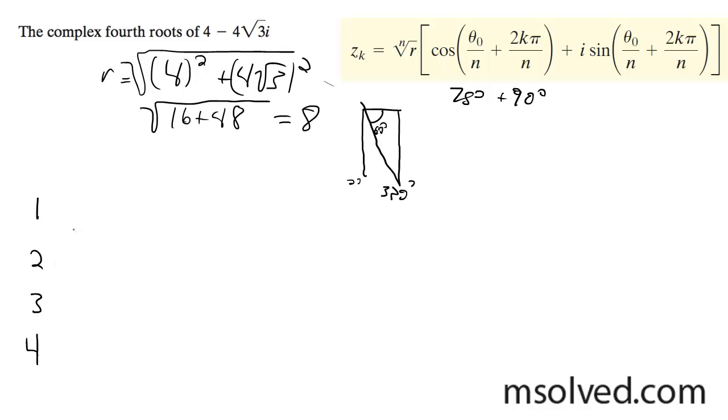Root number 1 is going to be the fourth root of 8. You can write it different ways. This is correct. So this ends up being the fourth root of 8 times cosine of 75 degrees plus i sine of 75 degrees.